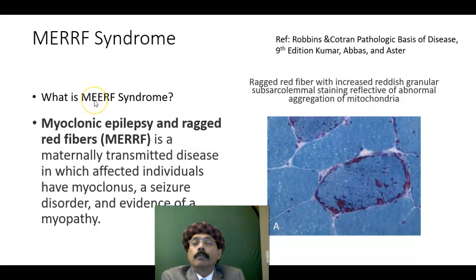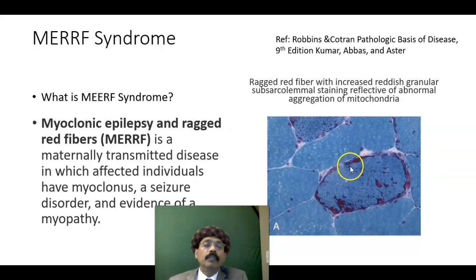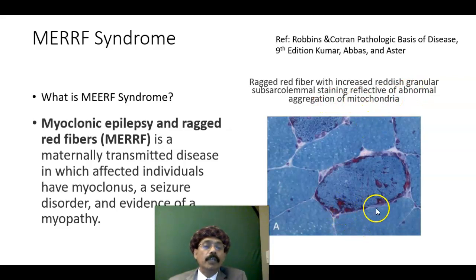It is myoclonic epilepsy with ragged red fibers. It is a maternally transmitted disease with myoclonus, a seizure disorder, and evidence of myopathy. If we look at the histology of the skeletal muscle, we see ragged red fibers with increased reddish granular sub-sarcolemmal staining, done by Gomori stain, which is reflective of abnormal aggregation of mitochondria. These mitochondria give red color on Gomori staining.